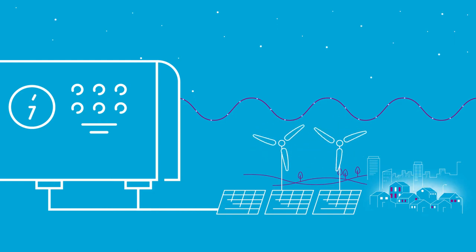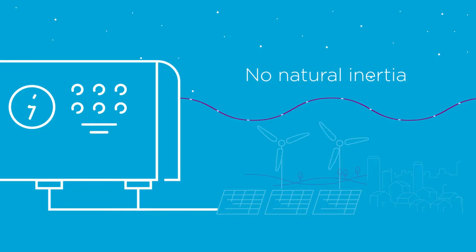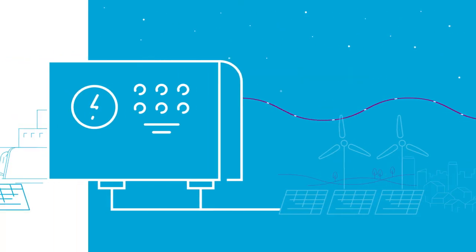The devices observe the grid frequency in order to inject their power. Therefore, they don't offer any natural inertia, so-called spinning reserve, that would help ensuring system stability.